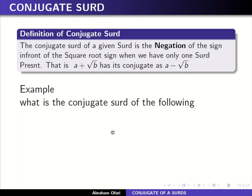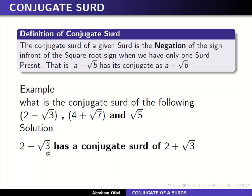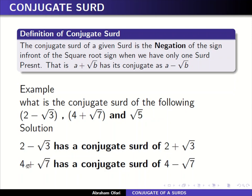Example: what's the conjugate surd of the following? I have two minus square root of three, and four plus square root of seven. So two minus square root of three has a conjugate surd of two plus square root of three. We simply change the sign to positive. And if it is positive, we change it to negative.